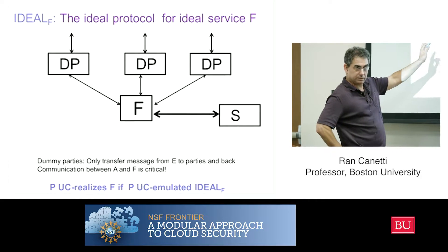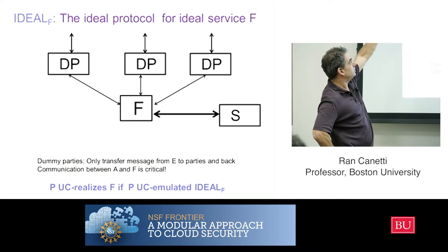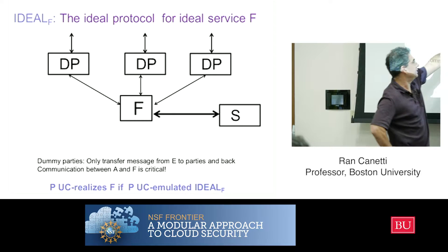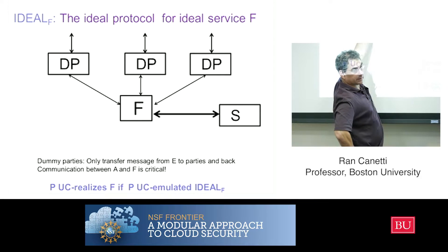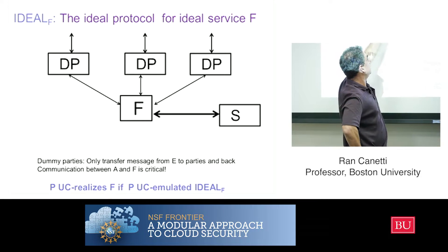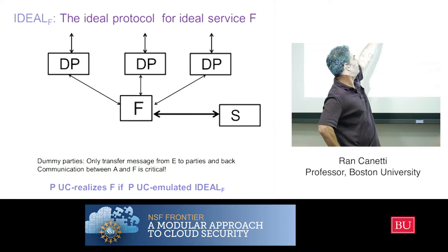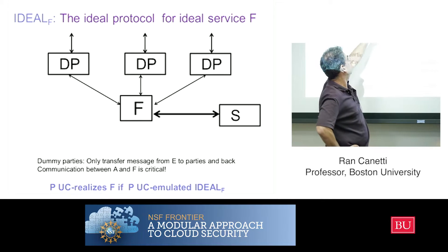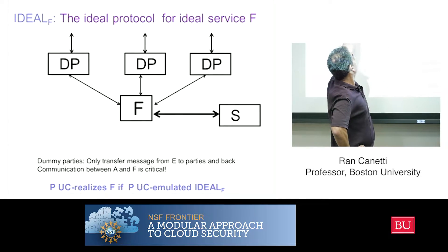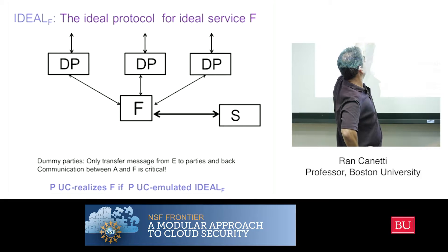This is a special protocol — an ideal protocol for an ideal service f. My ideal service is f. The ideal parties here are dummy parties, and each one of them corresponds to a different interface of the ideal service, to a different PID. So there are different parties, and each one of them is essentially a channel: it gets an input from some calling party and just forwards it to f.